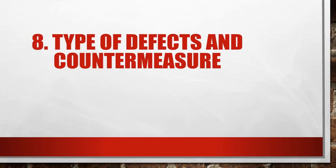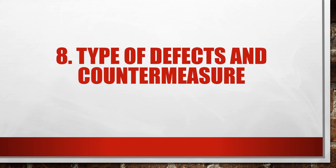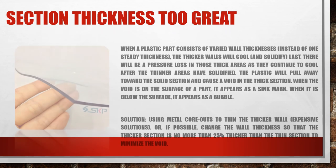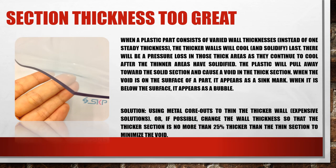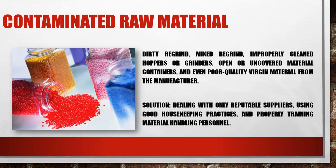Chapter 8: Types of Defects and Countermeasure. Section Thickness Too Great — this happens due to the cooling effect in a thicker wall. The simplest solution is to change the wall thickness. Contaminated Raw Material — this happens when there are foreign particles in the raw material. The solution is to keep good hygiene.